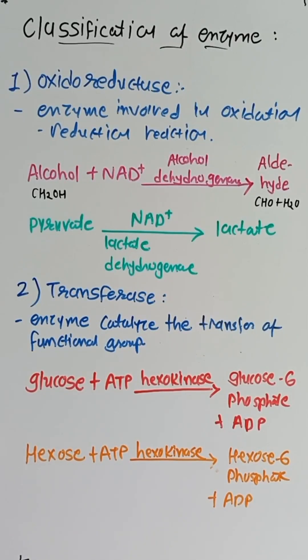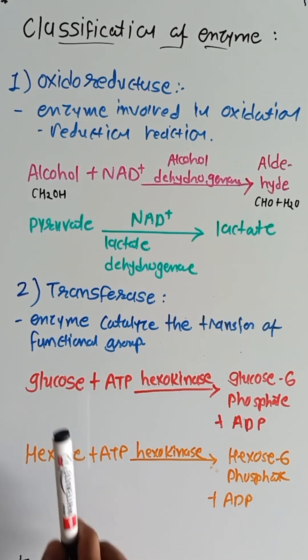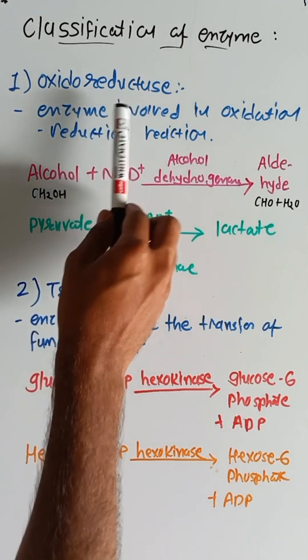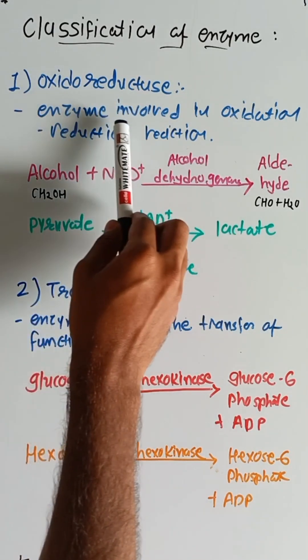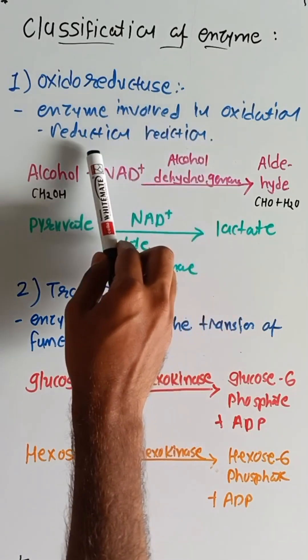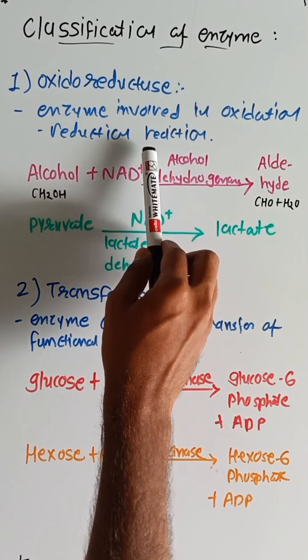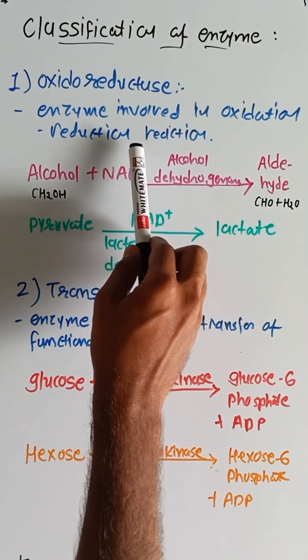Welcome back to another micro relation series, an apartheid guide. In this micro relation, we will discuss the classification of enzymes. There are six basic classifications. The first is oxidoreductases — enzymes involved in oxidation and reduction reactions.